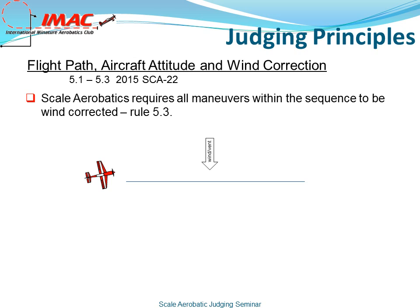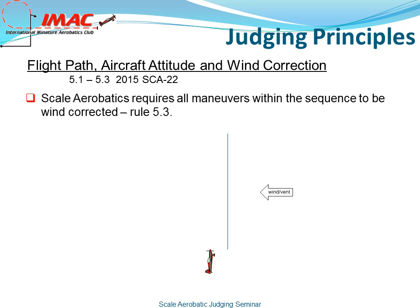Pitch and yaw may be used for wind correction. In the illustration below, the plane is yawed into the wind, and therefore the track will be in a straight line. The same applies to a vertical line. Add the wind component, and you expect the vertical line to be blown off track. With proper wind correction, the plane would pitch the nose into the wind and fly a perfectly vertical line.